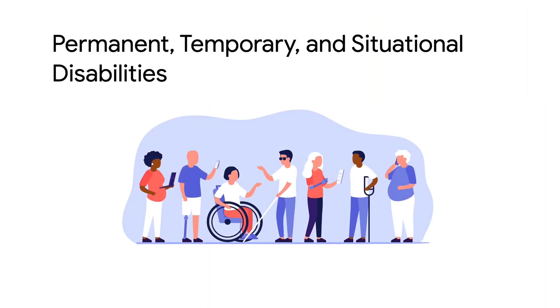Permanent, temporary, and situational disabilities — we all have them. Let's see why. You'll undoubtedly be aware that many people have a disability: visual, hearing, motor, or even cognitive impairment. If you have none of these disabilities, you might think that you won't face the same issues that people with diverse accessibility needs face.